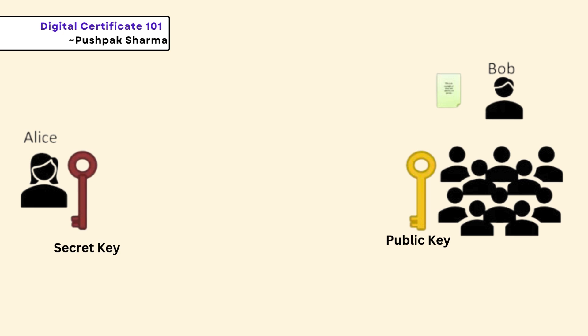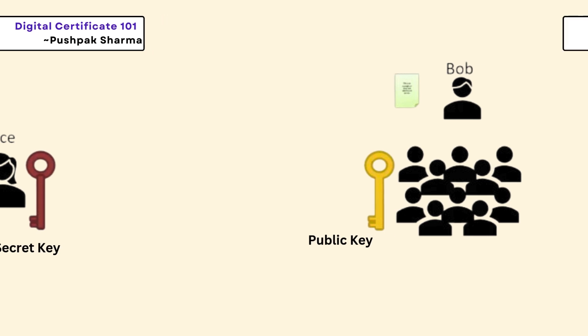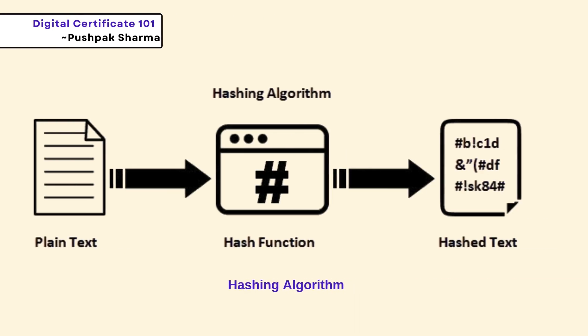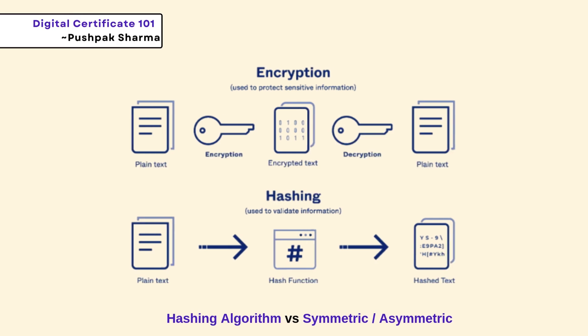In asymmetric encryption, what's encrypted with one key can't be decrypted with the same key. A check with a name and check number is an asymmetric use case, where the bank or teller only needs to verify if it's from Jane Doe. Hashing differs from encryption — it creates a 1-to-1 mapping, meaning the same file will always produce the same hash. In encryption, plain text is encrypted, while hashing creates a digest. Encryption hides information, whereas hashing is used for verifying data integrity.